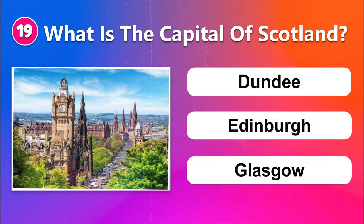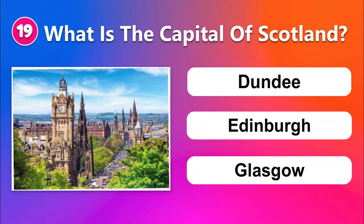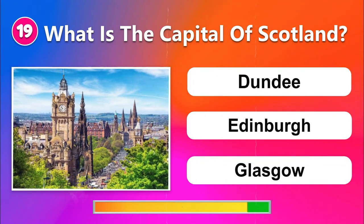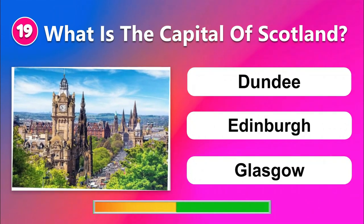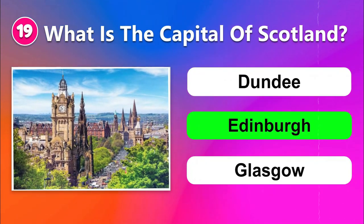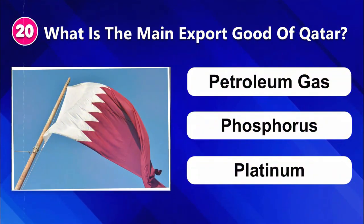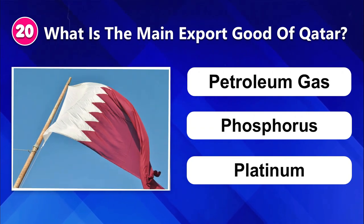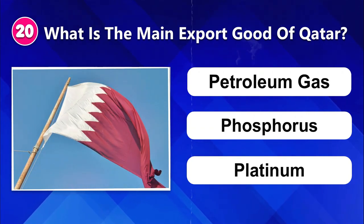Number nineteen: What is the capital of Scotland? Dundee. Number twenty: What is the main export good of Qatar? Petroleum gas, phosphorus, or platinum.